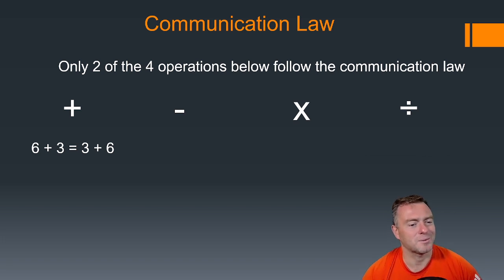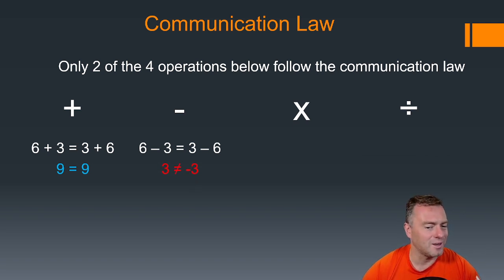With plus, the question that you just need to ask yourself is: if you change the order around, does it still equal the same thing? So if you do 6 + 3, does that equal 3 + 6? And it's pretty simple. Yes, it does. 9 does equal 9. If we had 6 - 3, does that equal 3 - 6? It actually doesn't. It equals negative 3. So 3 does not equal negative 3.